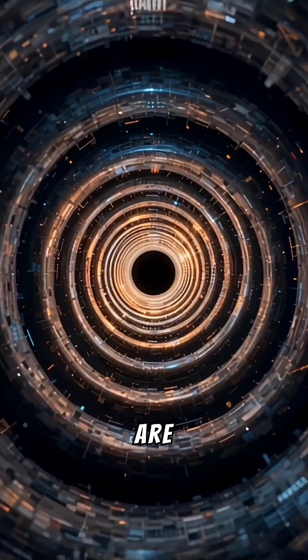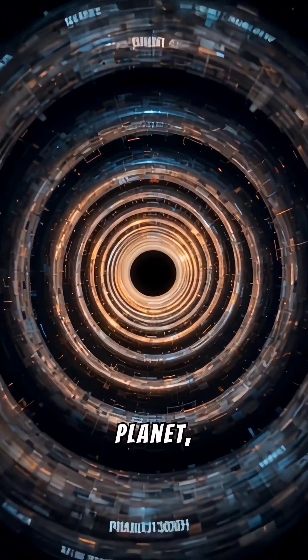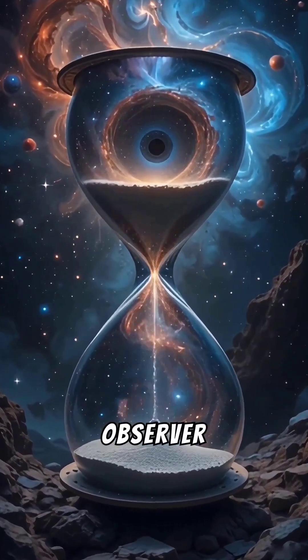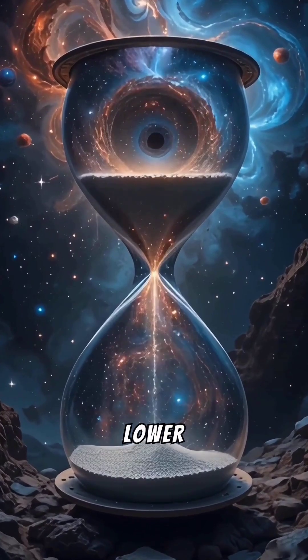Essentially, the closer you are to a massive object, such as a planet, a star, or even a black hole, the slower time will pass compared to an observer located in a location with lower gravity.